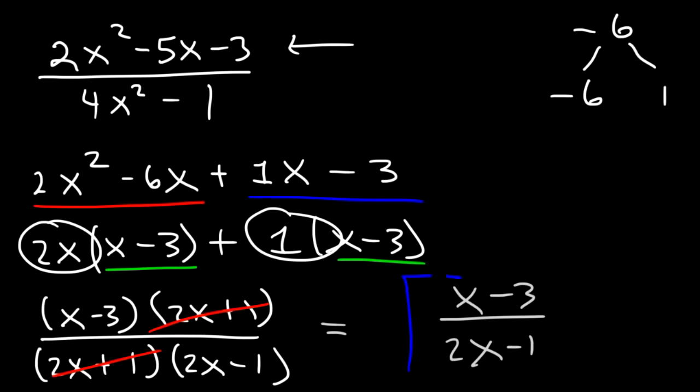Now you know how to simplify rational expressions: factor, take out the GCF, and cancel. That's basically it. Thanks for watching.